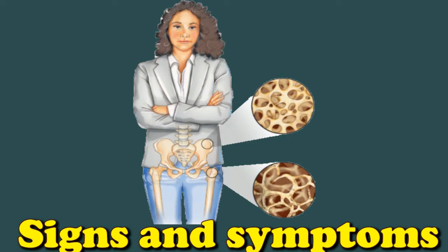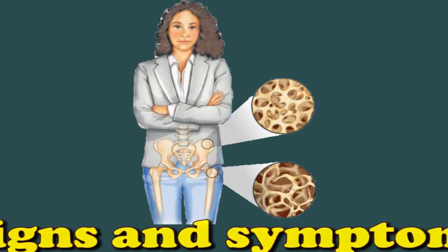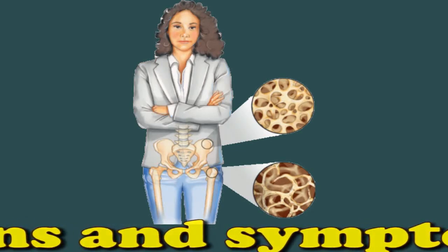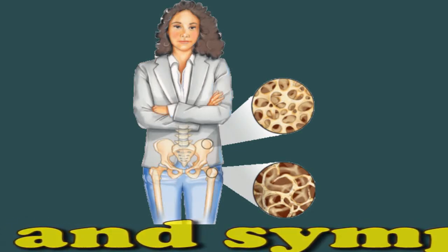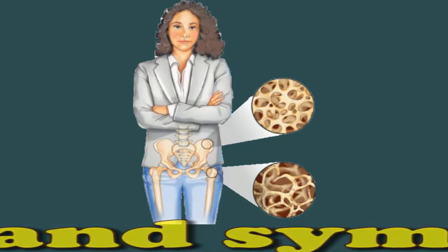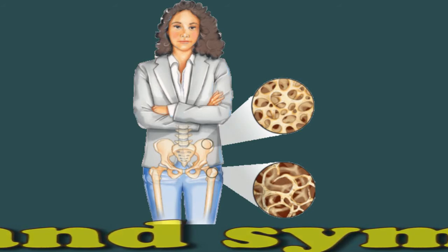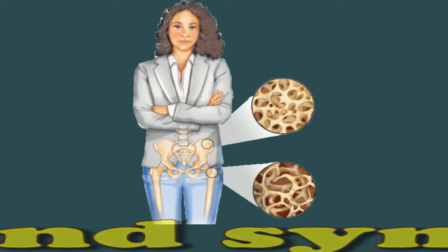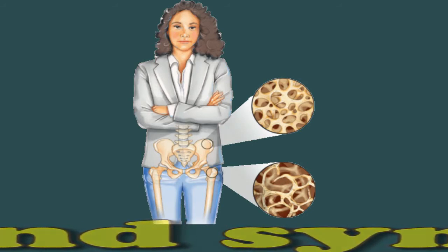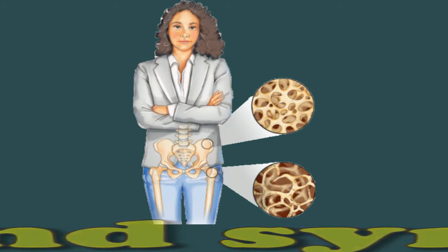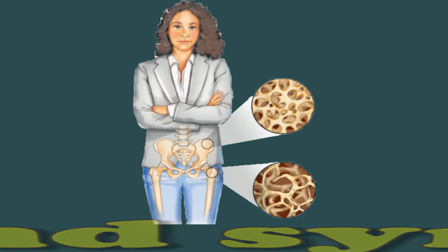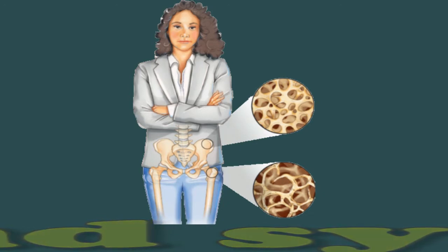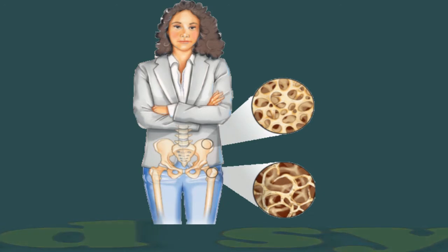For people who have osteoporosis, if a break occurs in the spinal vertebrae, it can lead to changes in posture, a stoop, and curvature of the spine. People might also notice a decrease in height, or their clothes may not fit as well as they did previously.